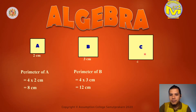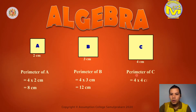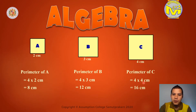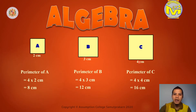Next, Square C. What is the perimeter of Square C? 4 times 4. 4 sides times the length of each side. So 4 times 4 is equal to 16. Or simply add the 4 sides: 4 plus 4 plus 4 plus 4 is equal to 16.